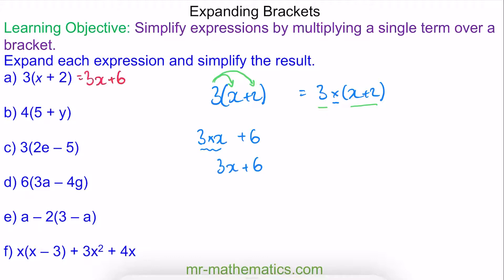For question B, we have 4 lots of 5 plus y. And again, we multiply everything on the outside, which is 4, by each of the terms on the inside of our brackets.